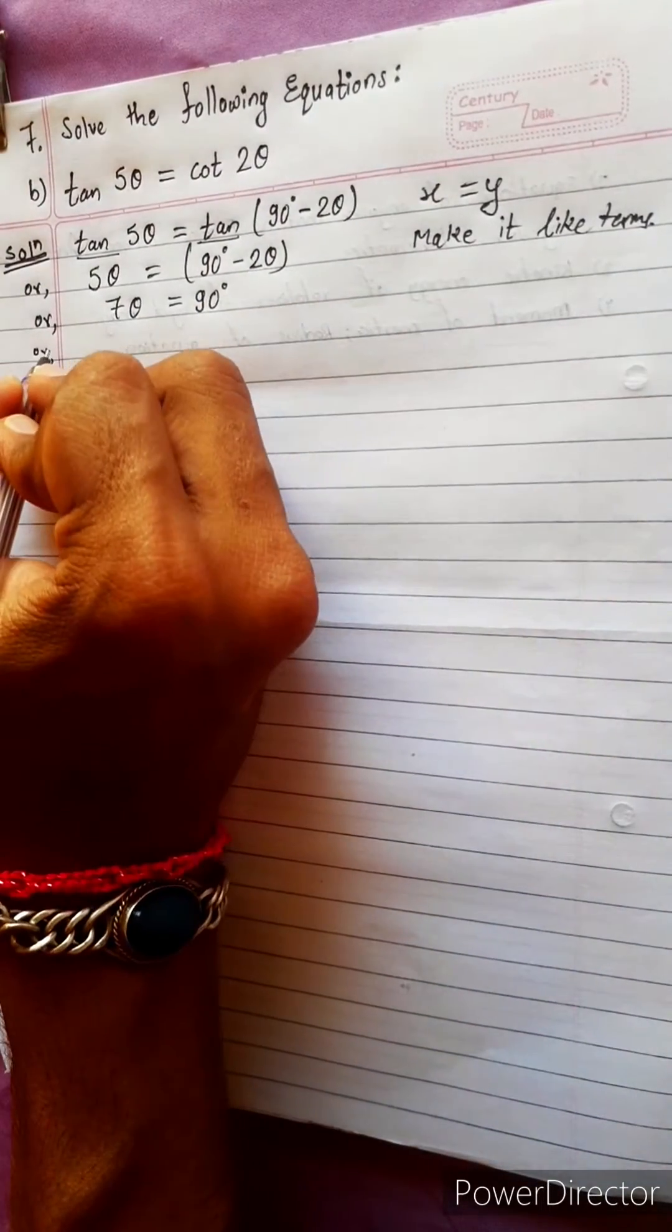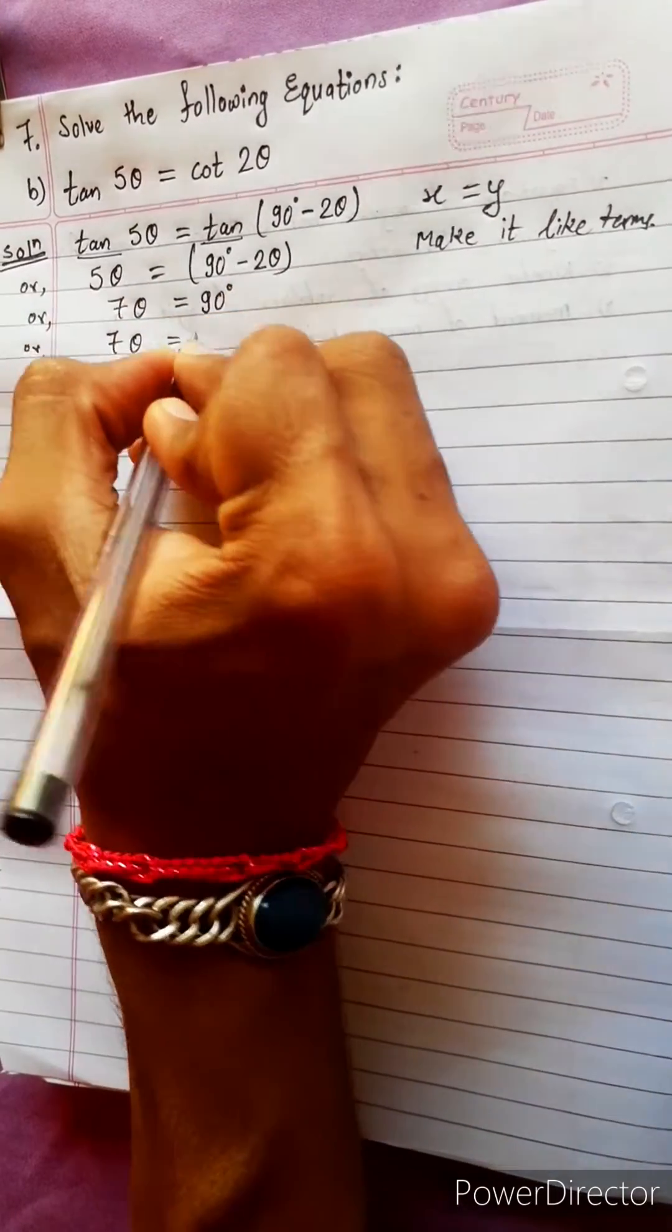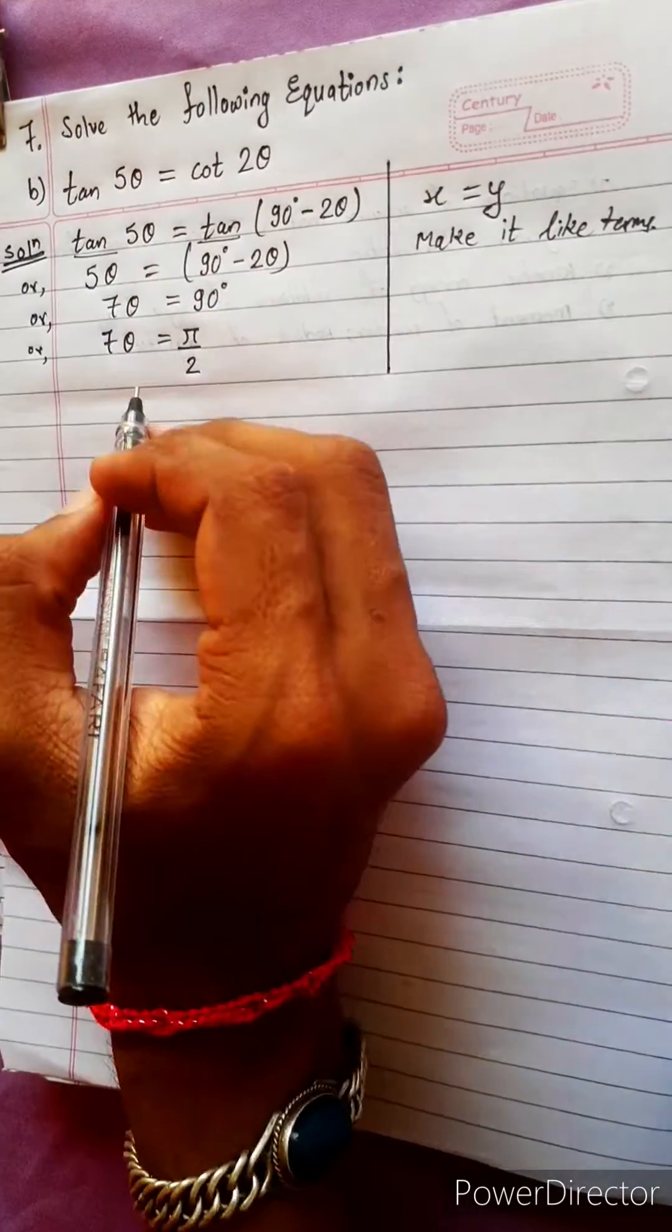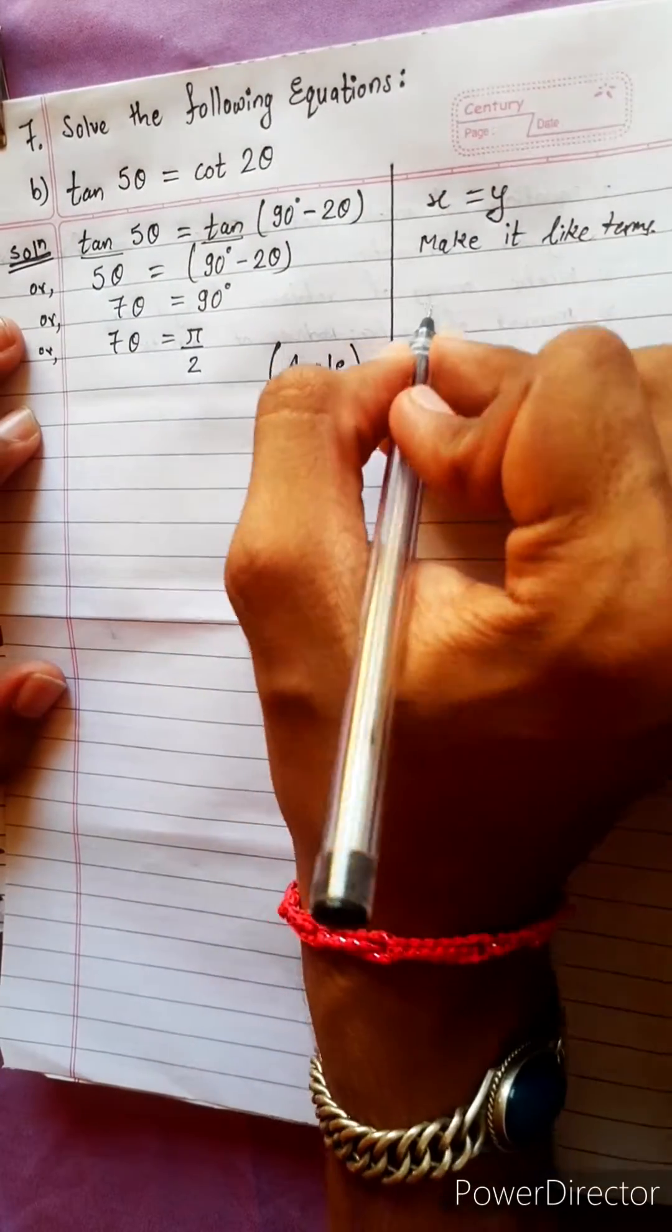90 degree means in standard form, write it as 7θ equals to π by 2. This is just angle. Angle we need to find. Now for general solution in terms of tan.